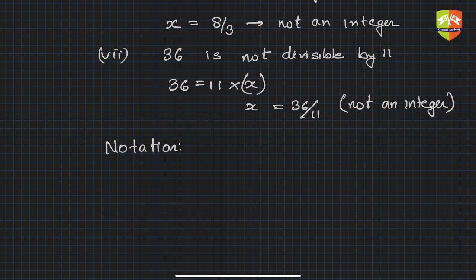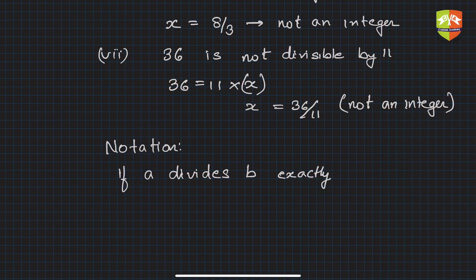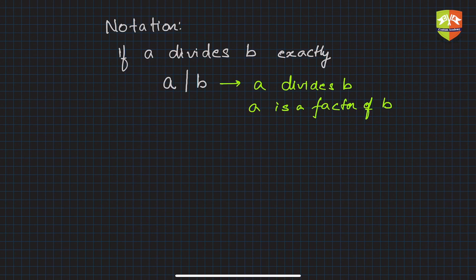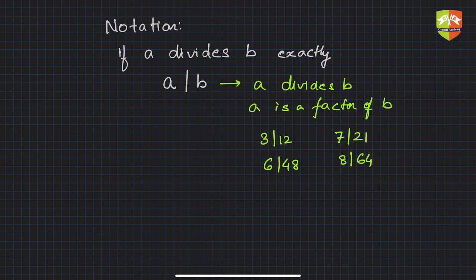There is a special notation for divisibility. If a divides b exactly — meaning with no remainder — we write a|b (a vertical bar b). This means 'a divides b,' or equivalently 'a is a factor of b.' Examples: 3|12, 6|48, 7|21, 8|64. Wherever you see this notation, it means a divides b.